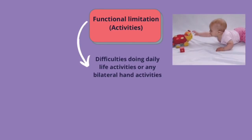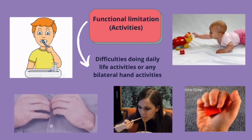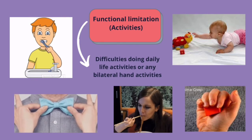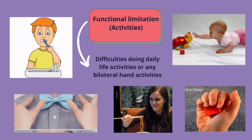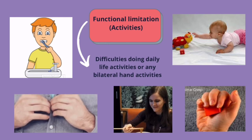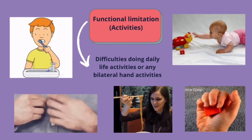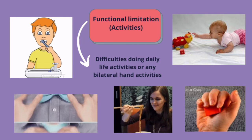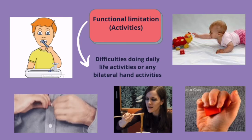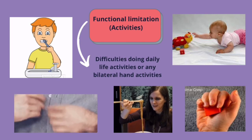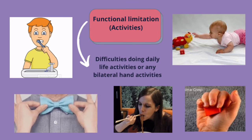For functional limitations, if the fractured hand is the dominant hand, the patient will have difficulties doing daily life activities or bilateral hand activities. For example, they will have difficulties brushing teeth, reaching out for far objects, grasping objects, bringing food to mouth, and difficulties in wearing, buttoning, and zipping clothes or pants. These activities require a lot of forearm movement, which is mostly affected by Galeazzi and Monteggia fractures.